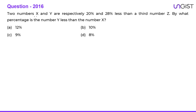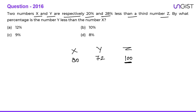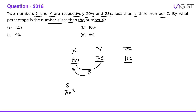Next question: two numbers x and y are respectively 20 percent and 28 percent less than a third number z. Assume z as 100. So x is 20 percent less than z, which is 80, and y is 28 percent less than 100, which is 72. By what percentage is y less than x? Y is 72 and x is 80, so y is 8 less than x. 8 is what percentage of 80? 8 is 10 percent of 80. So the answer is 10 percent.